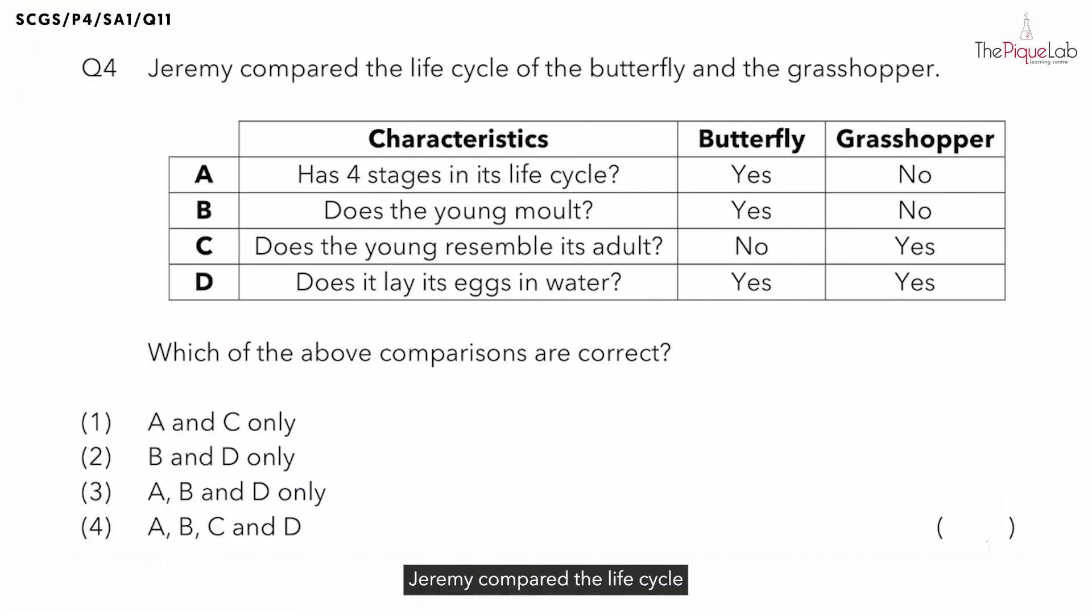Question 4. Jeremy compared the life cycle of the butterfly and the grasshopper. This question is asking which of the following comparisons are correct. Let's look at characteristic A. Does the butterfly and the grasshopper have four stages in its life cycle? How many stages does the butterfly have in its life cycle? Four.